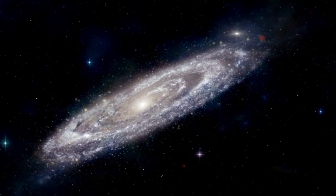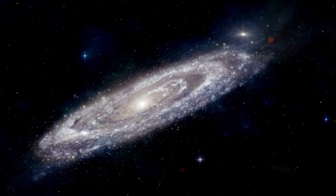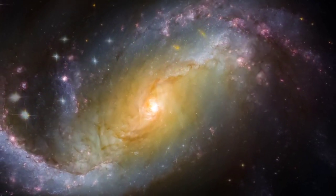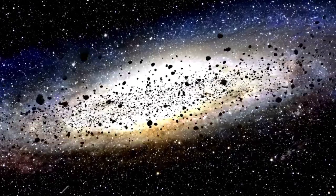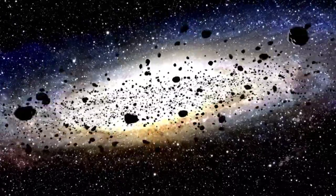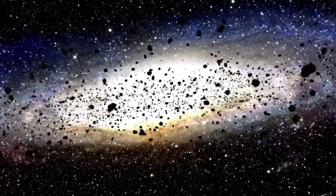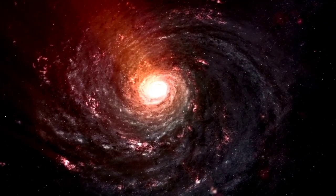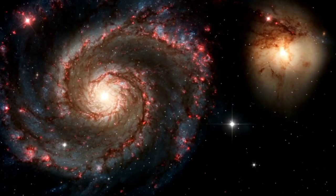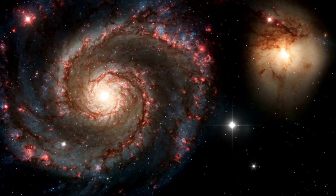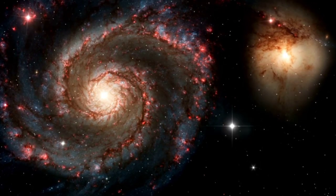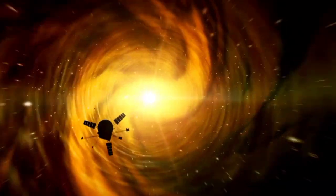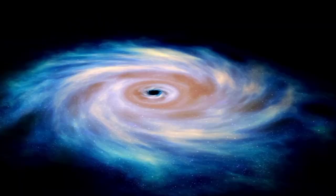The unfolding drama of Betelgeuse was closely monitored by Andrea Dupree, Associate Director of the Center for Astrophysics at Harvard and Smithsonian, and her team. They used the Hubble Space Telescope to study the star as part of a three-year project observing variations in Betelgeuse's outer environment. Hubble's sensitivity to ultraviolet light allowed researchers to probe the layers above the star's surface.